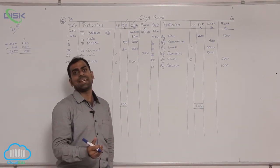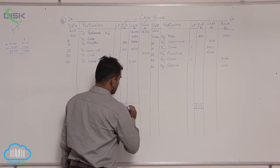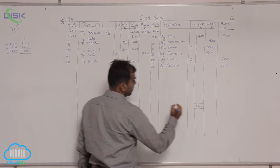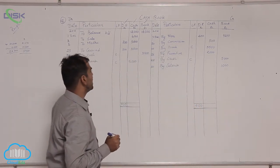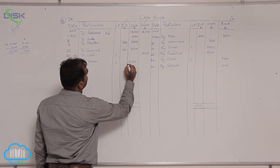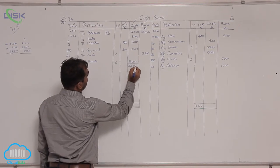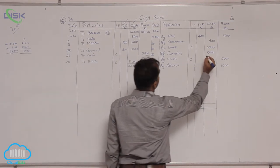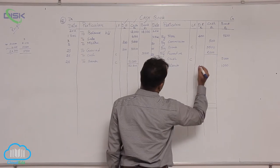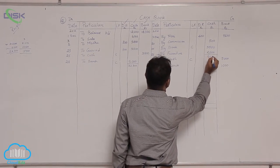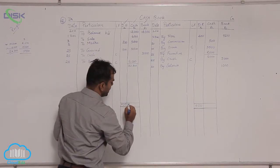Now we have to balance the cash and bank column. So let us first balance cash column. Before entering the greater total on both the sides, I am totaling the debit side. The debit side total comes to 32,300. Now check what is the total on the credit side. Here the total is 6,000. Now since 32,300 is more, we enter 32,300 on both these sides.